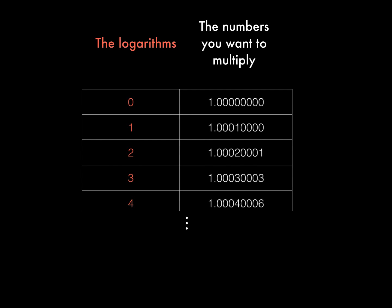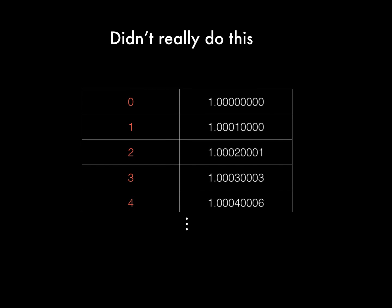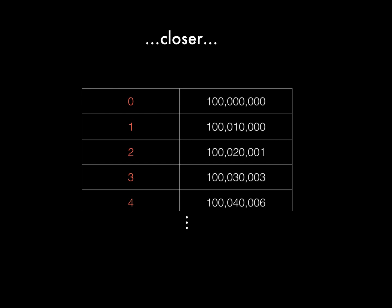First, I should tell you that his table was a little different than I showed you because he didn't know about a really handy bit of mathematical notation, the decimal point. So instead of starting his table with 1.0 on the right, he started with 100 million.